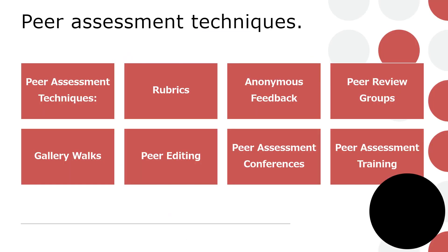Peer and self-assessment techniques are valuable tools for promoting student engagement, fostering critical thinking skills, and encouraging metacognitive reflection. For peer assessment, number one is rubrics: provide students with clear rubrics outlining the criteria for assessment so peer assessors can evaluate their peers' work systematically. Next is anonymous feedback — encourage anonymity in peer assessment to minimize biases and promote honesty.